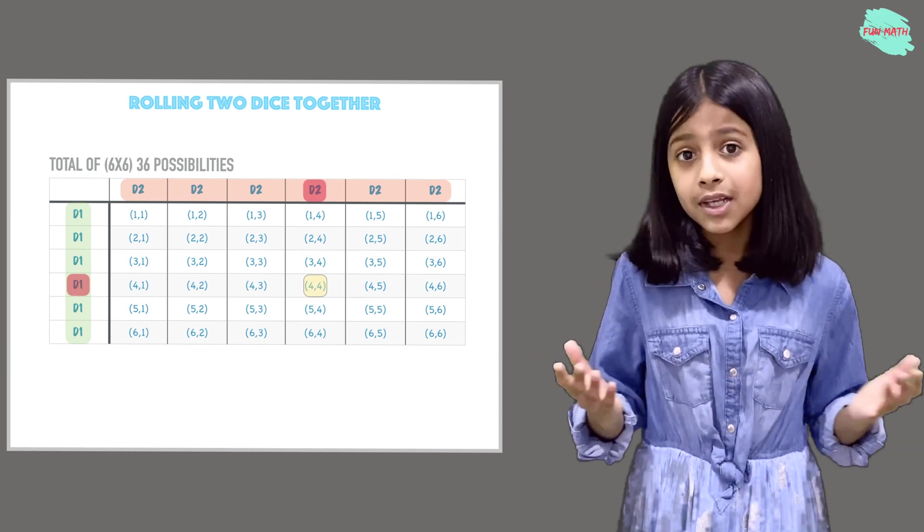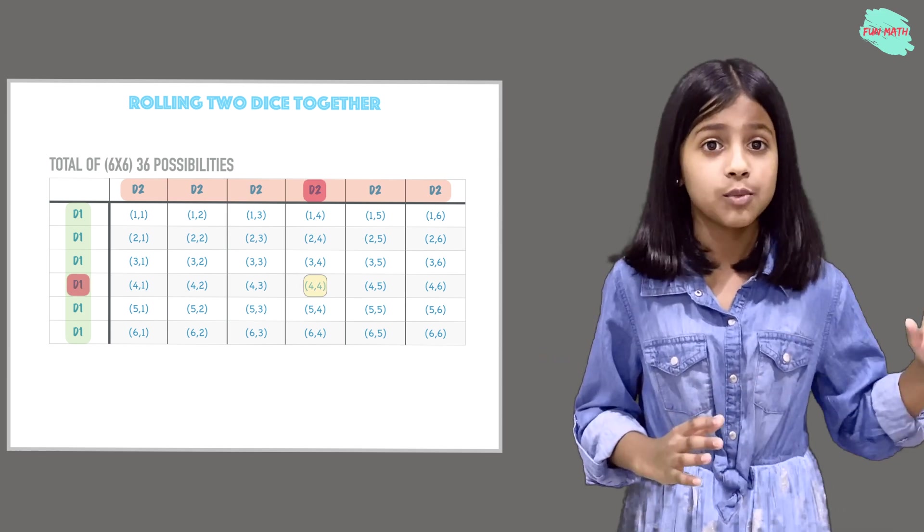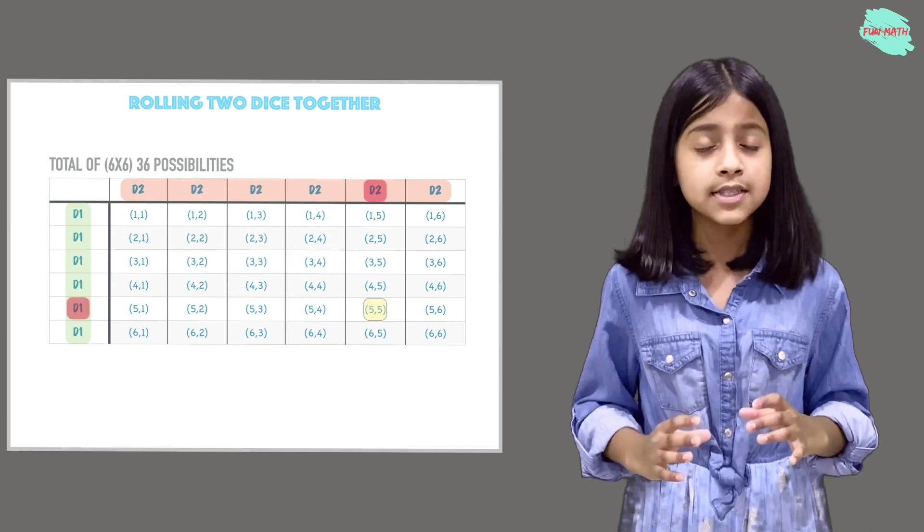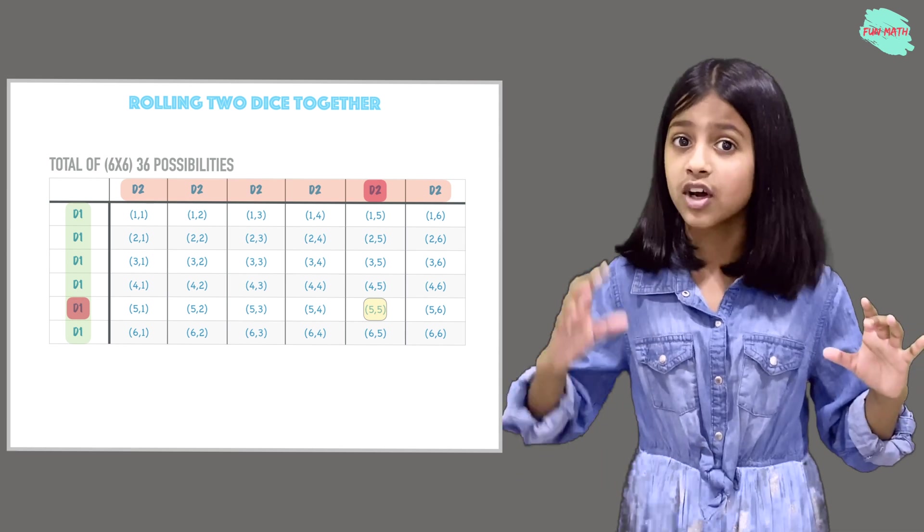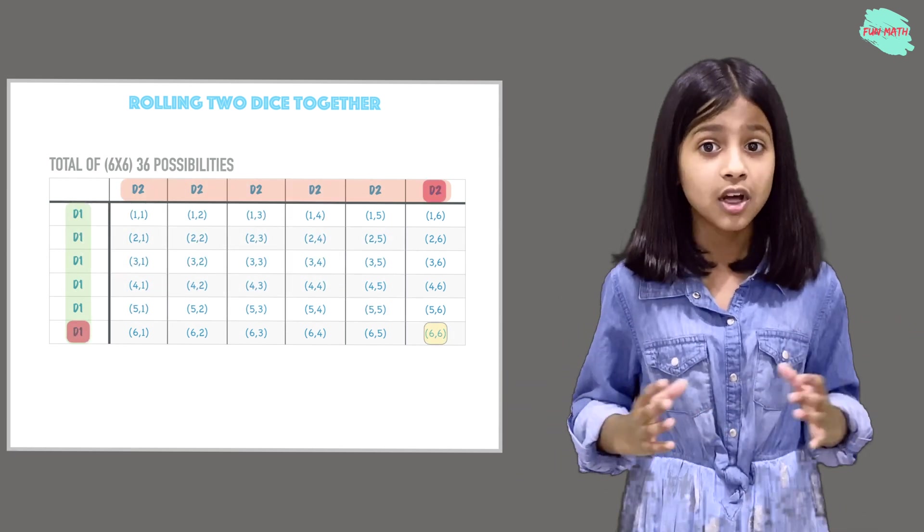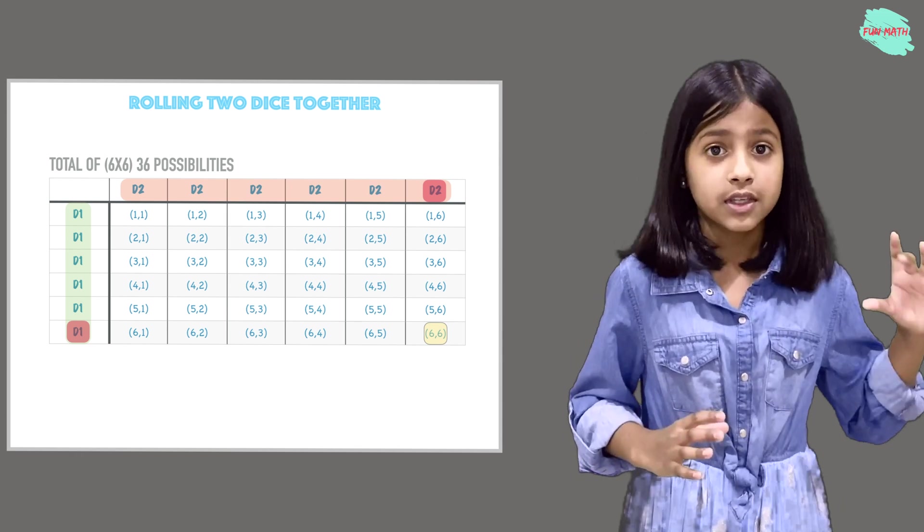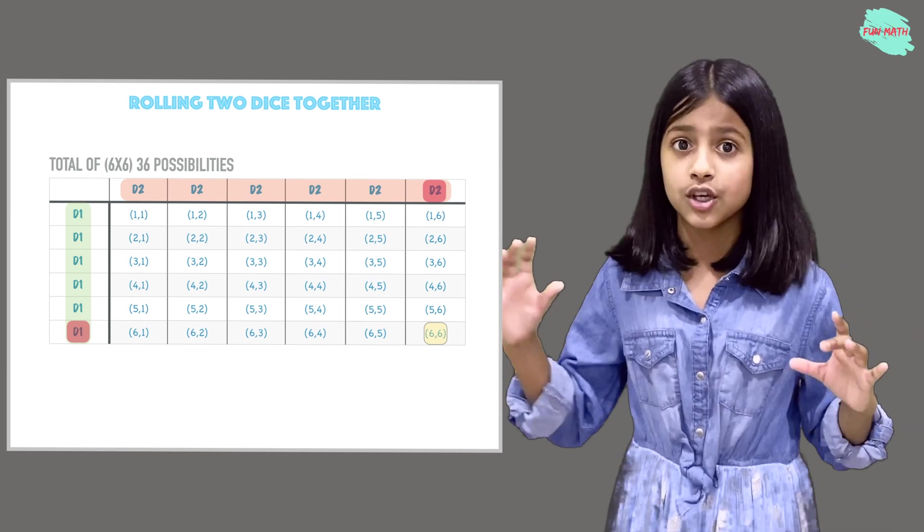Another one is 4 on d1 and 4 on d2. Another example is getting 5 on d1 and 5 on d2. Last but not least is getting 6 on d1 and 6 on d2.